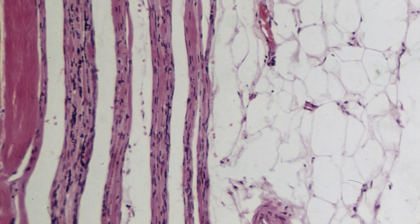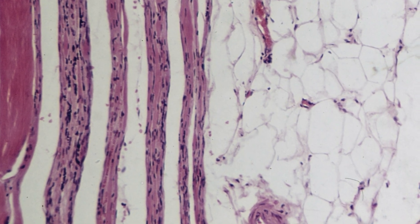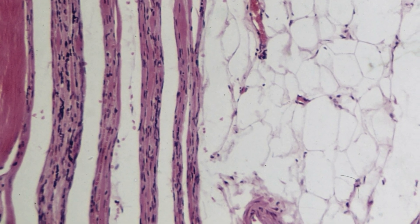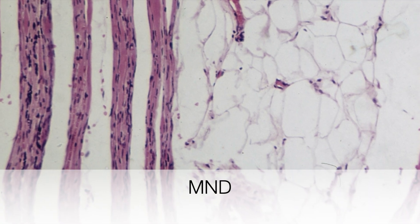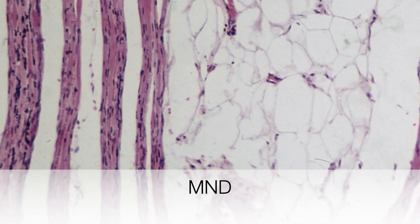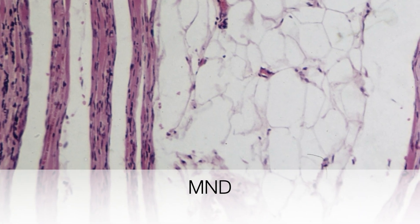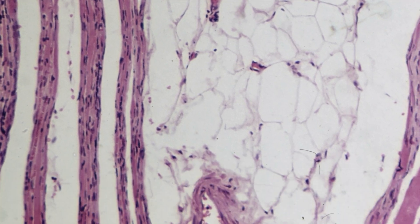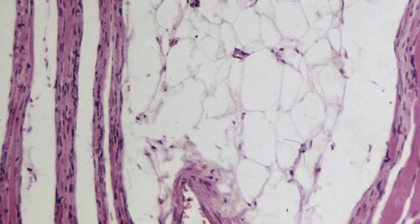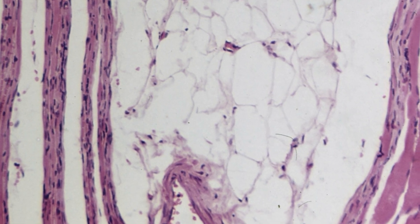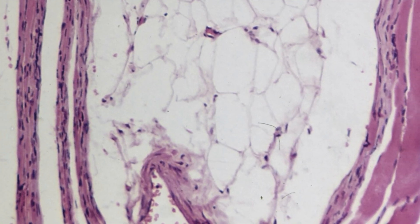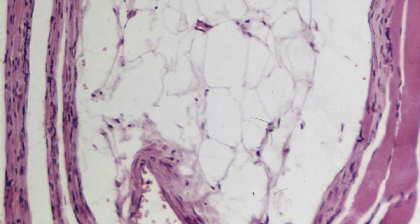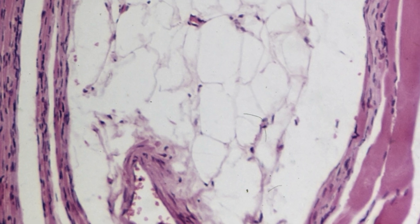This is a section of skeletal muscle from a patient with motor neurone disease. You can see that the muscle has been largely replaced by fat, but the remaining muscle fibres have become thinned and atrophic, as we can see on the right hand side of the picture.